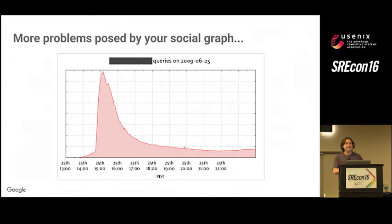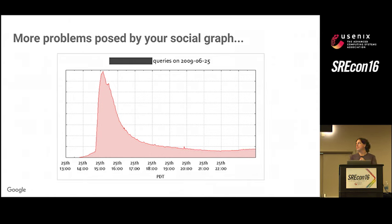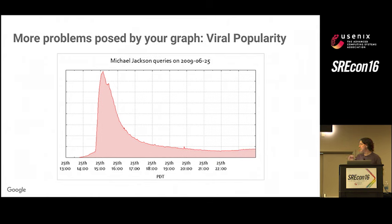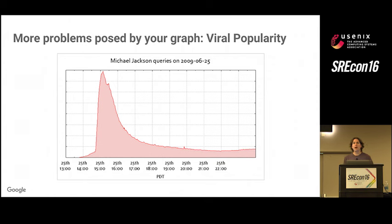Now, even with a good storage system, users present another problem. Does anyone remember what happened on May 25th, 2009? — Michael Jackson died. That was a day that caused a query graph spiking dramatically. This is an excellent example of how you end up with a median level of requests that's much lower than the peak. That spike showed up in our search queries, news systems, and social networks everywhere as people tried to find out what had happened.